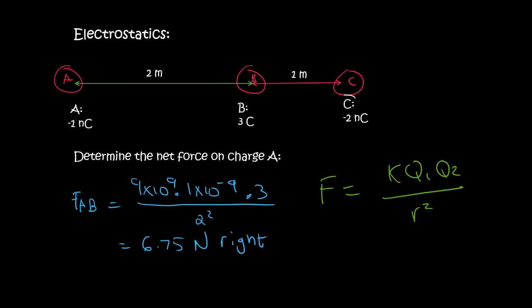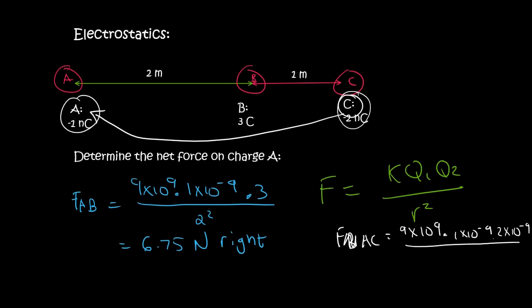Now we need to see, how does C affect A? So we're going to go FAC. And so that's going to be K, which is 9 times 10 to the 9, multiplied by A's charge, which is 1 times 10 to the minus 9, multiplied by C's charge, which is 2 times 10 to the minus 9. And the distance between them is 1 plus 2, which is 3 squared. And that gives us a very small value, 2 times 10 to the minus 9 Newtons.